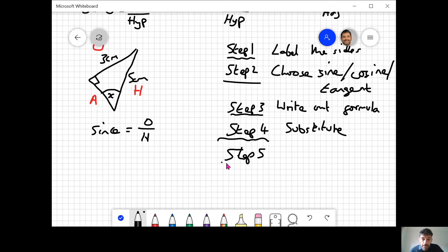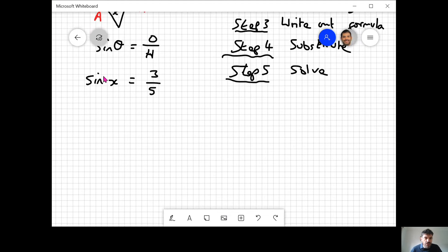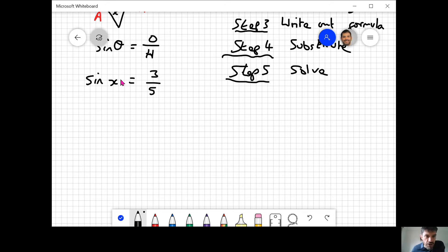Step five: solve, meaning find the unknown. This should be theta, sorry. Sine theta. We're going to substitute whatever values we're given. Theta is called x, so sine x equals 3 over 5. Notice this fraction will always be less than one because hypotenuse is the longest side. To solve, we use inverse sine—shift sine on your calculator—and that will give you your answer.